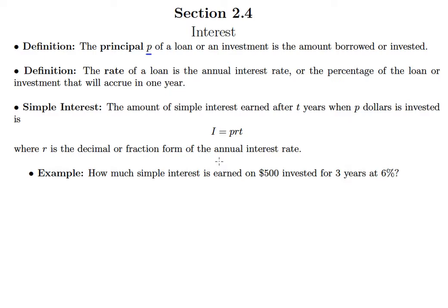The reason we use the term simple interest is because there's something called compound interest, which we won't really cover here. That is a different type of interest. Basically the difference between the two is that with simple interest, you will only earn money based off of the original amount you put in. Whereas with compound interest, every period of time that interest builds up, you get to earn interest on previously earned interest. That's why we call it simple interest.